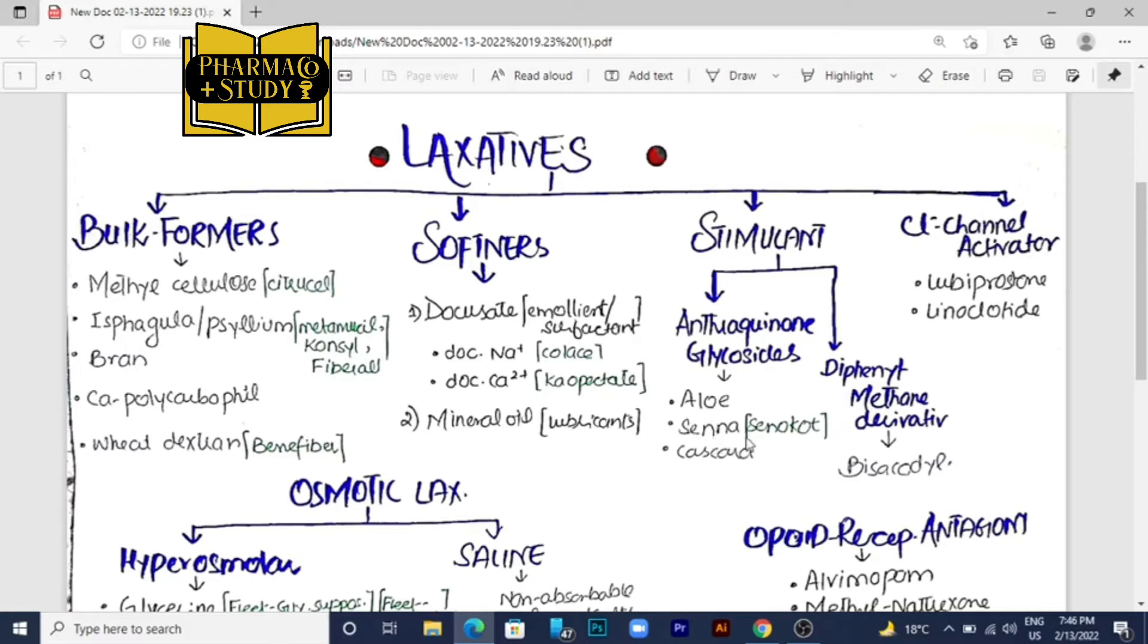Aloe vera can be used simply herbally in the home as a home remedy, but SANA comes under pharmaceutical form. The other class which acts as stimulant laxatives is known as diphenyl methane derivatives. In this class the drug is bisacodyl. We will discuss some very important points about bisacodyl in the next lecture.